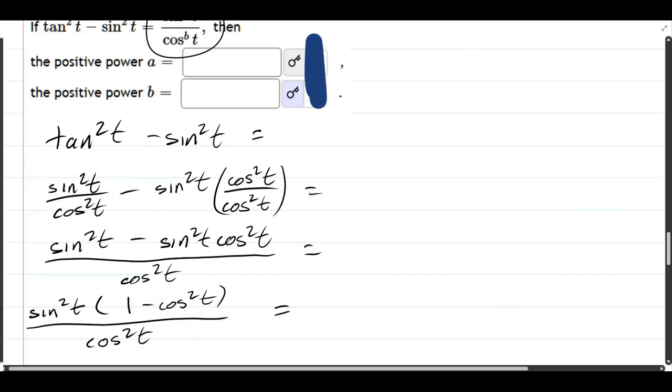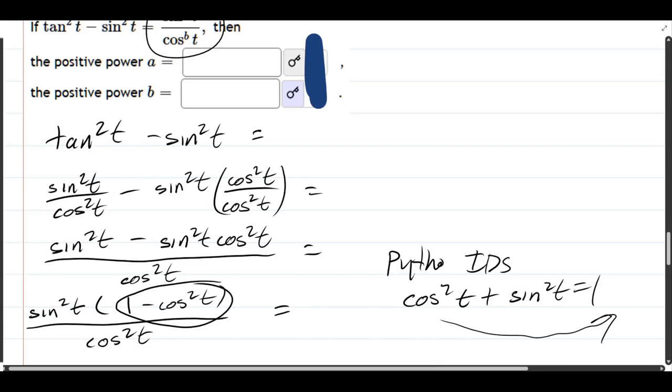Remember our Pythagorean identities. We have cos squared t plus sine squared t equals 1. And I want to have 1 minus cos squared t, so I can substitute that out for something else. So, you subtract cos squared t to the other side, substitute that in, and you should be able to simplify it down to just sine to a power over cosine to another power, and the a and b are just those powers.